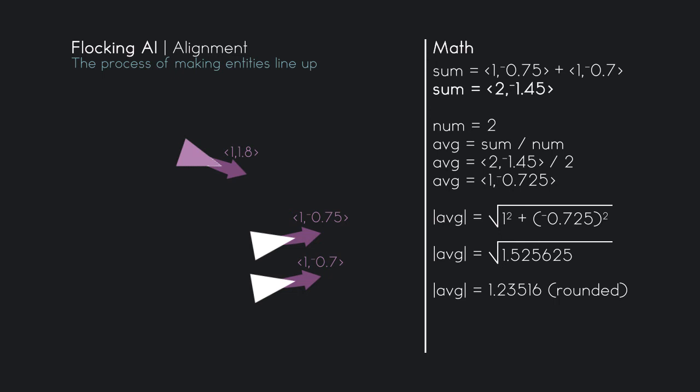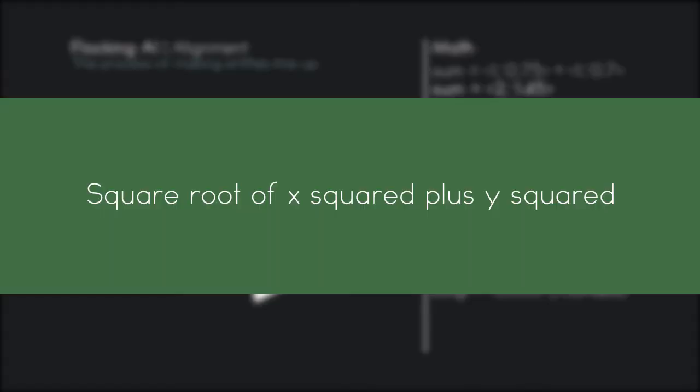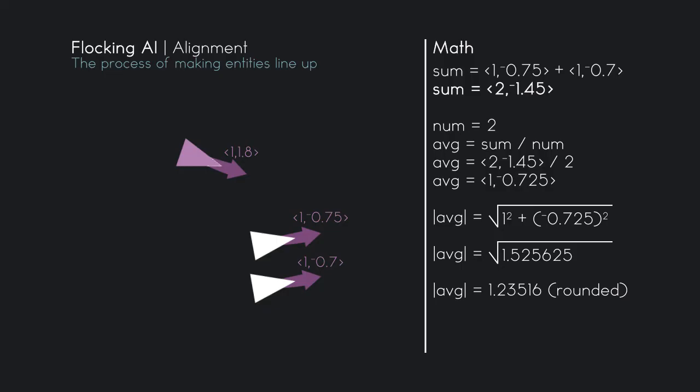Now we need to normalize that vector. So we need to divide that vector by the length. The length is the square root of x squared plus y squared. So 1 squared plus negative 0.725 squared gives us 1.525625. We square root that and get 1.23516, that is a rounded value. That is the length of the vector, noted by having vertical lines before and after the vector.